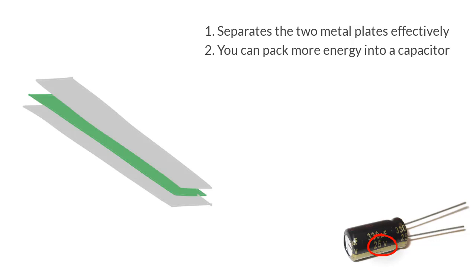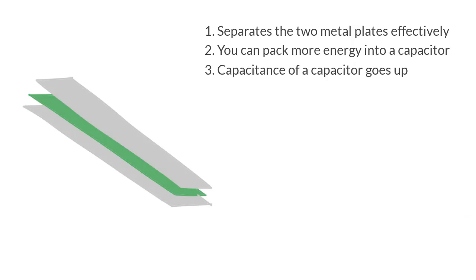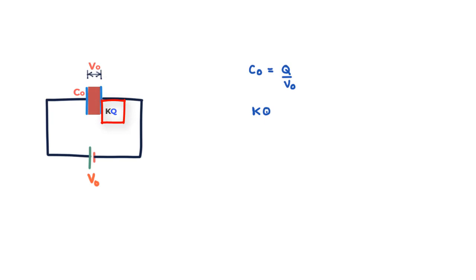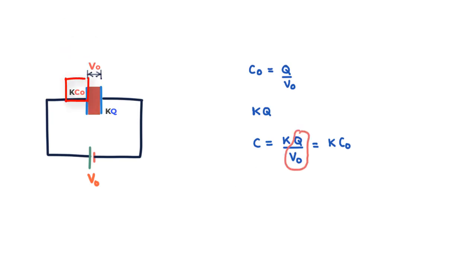The third reason is that the capacitance of a capacitor with given dimensions goes up when you put a dielectric between the plates compared to vacuum. If we slide a dielectric in between the plates while keeping the battery connected, the battery ends up pumping more charge on the plates to maintain the potential difference V₀ across the plates. The charge on the plates increases by a factor of K, so the new charge is K times Q, and the new capacitance is KQ divided by V₀ — the capacitance has gone up by a factor of K.